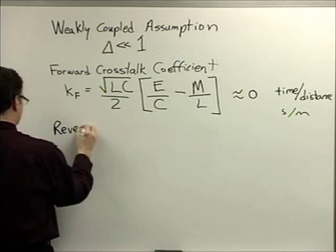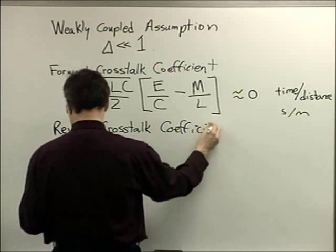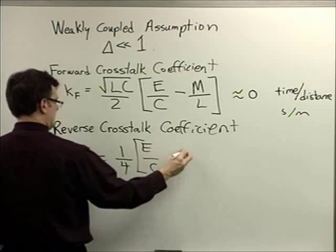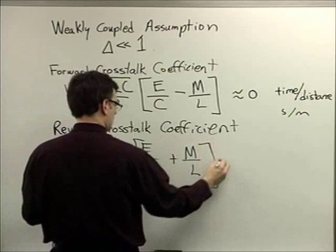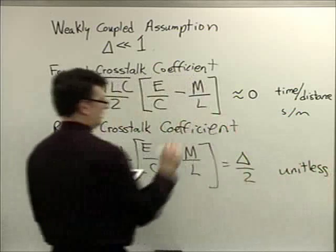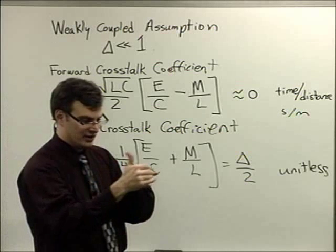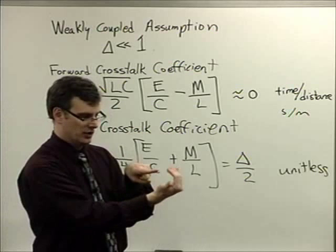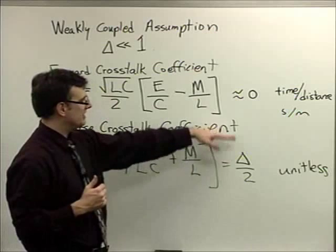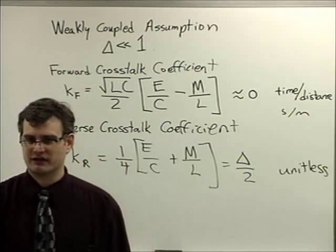My reverse crosstalk coefficient, kappa sub r is equal to 1 over 4, E over C plus M over L. And this should be equal to basically delta over 2. And it is unitless. This is not going to be zero. In fact, this is usually the kind of crosstalk that dominates. I've got two lines that come close together. I send a signal down one. Most of the disturbance that you're going to see is when the signal comes down is a signal on the input of line number 2 traveling in the opposite direction. And these have different units because the manifestation of forward crosstalk and backwards crosstalk are actually different from one another. It makes sense why they're different when you think about it, but I'll show you what I mean.